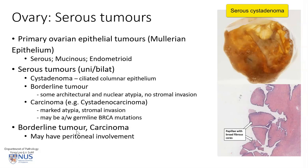It's also important to note that borderline tumors, together with carcinoma, can have peritoneal involvement, and it is often the extent of peritoneal involvement that is very important in the staging and prognosis of these borderline tumors as well as the carcinomas.